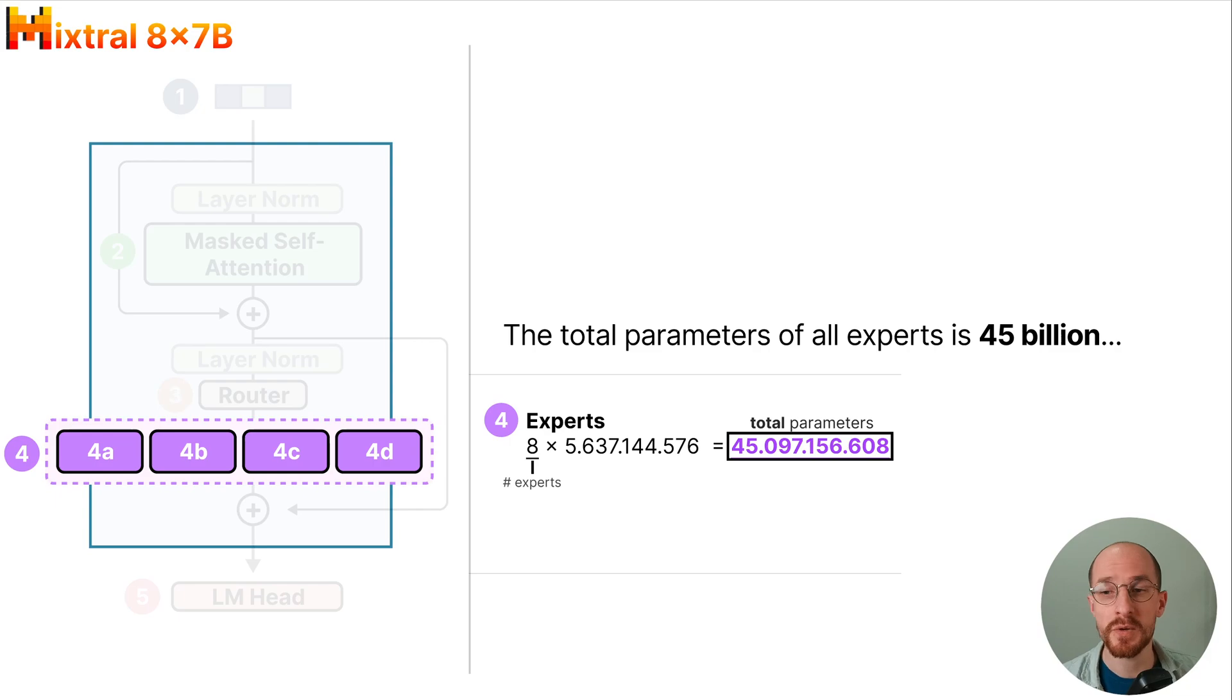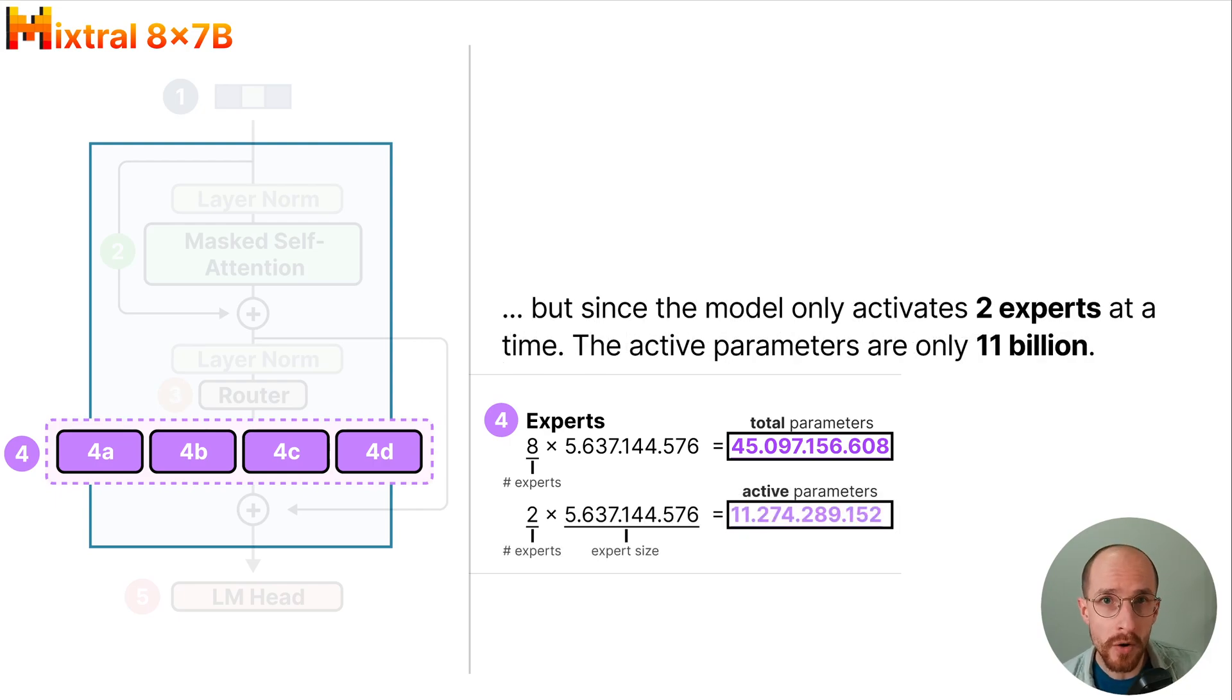The total parameters of all experts is 45 billion, but since the model only activates 2 experts at a time the active parameters are only 11 billion.